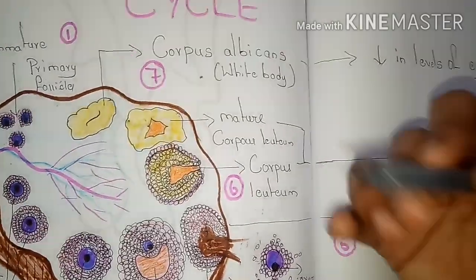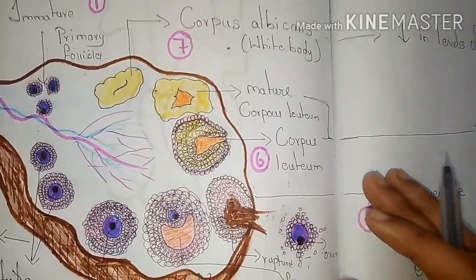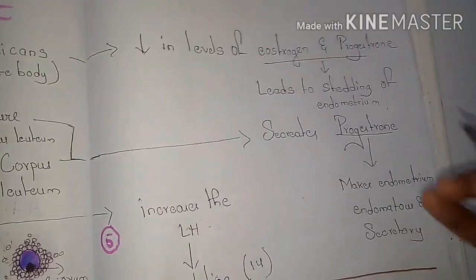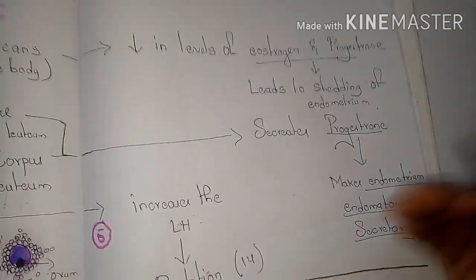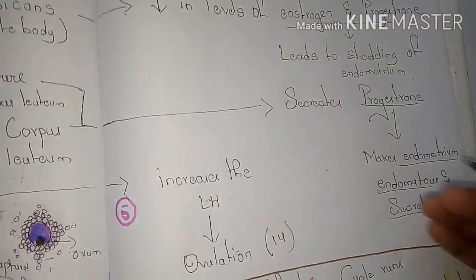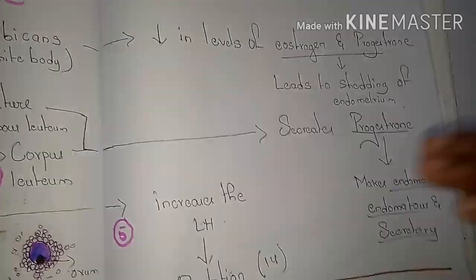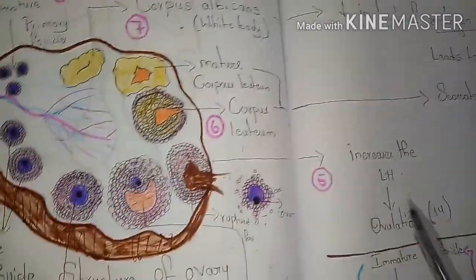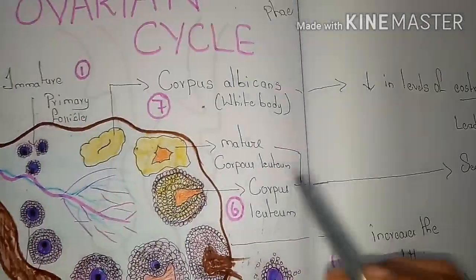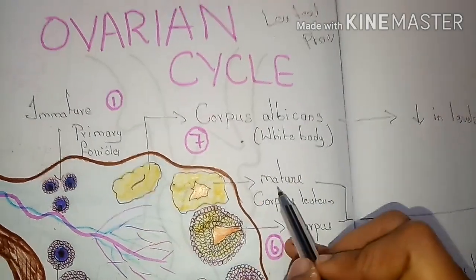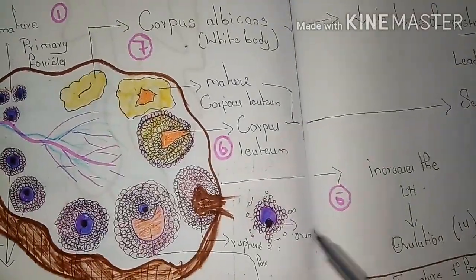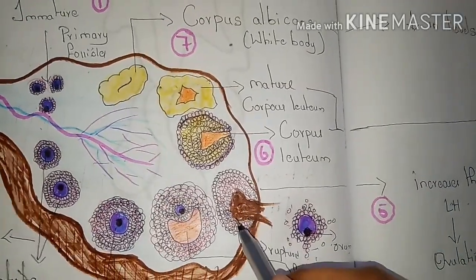The mature corpus luteum, also known as the yellow body, secretes progesterone hormone. This progesterone makes the endometrium edematous and secretory — it provides stiffness to the endometrium and helps it secrete substances to become more functional. This is the sixth change in the ovarian cycle. After the mature corpus luteum completes its function, it develops into the corpus albicans when no fertilization occurs.